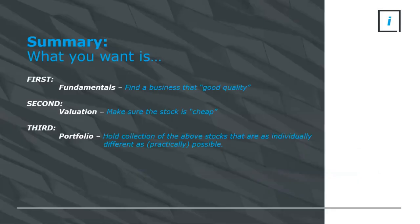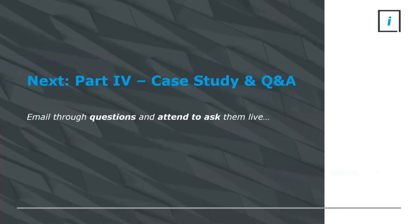In summary, what you want is good businesses, make sure you don't overpay for them — preferably cheap — and hold a collection of them that are as individually different as practically possible to construct a portfolio. The next part, coming back in January, will include a brief case study and a bulk Q&A. Please email questions to Simon, and we'll compile them to address in the presentation. If you're there live, ask them live.